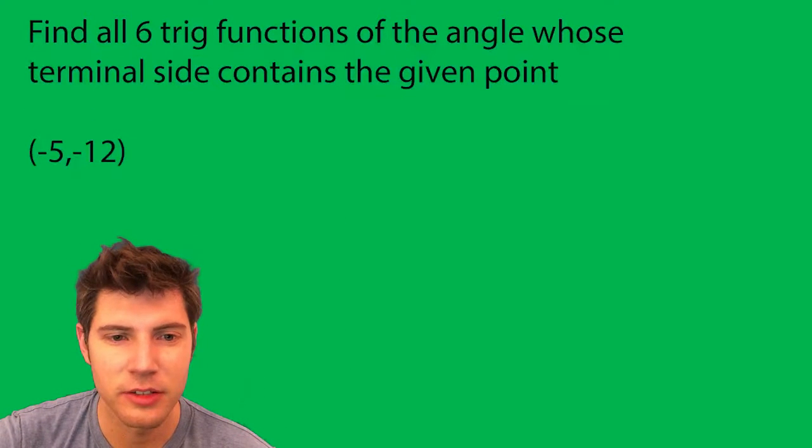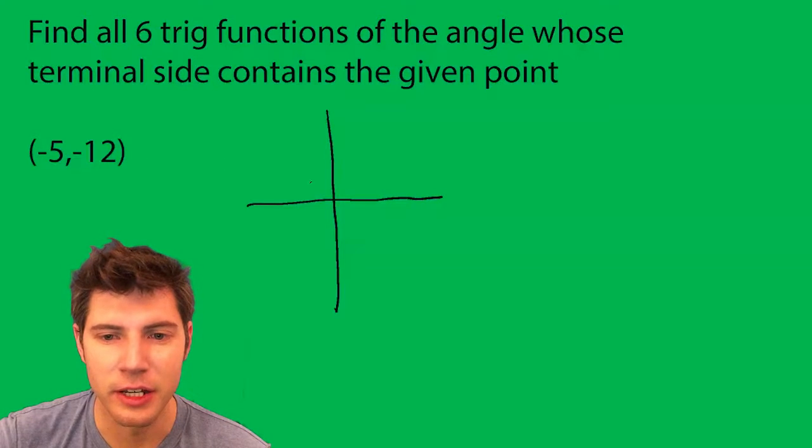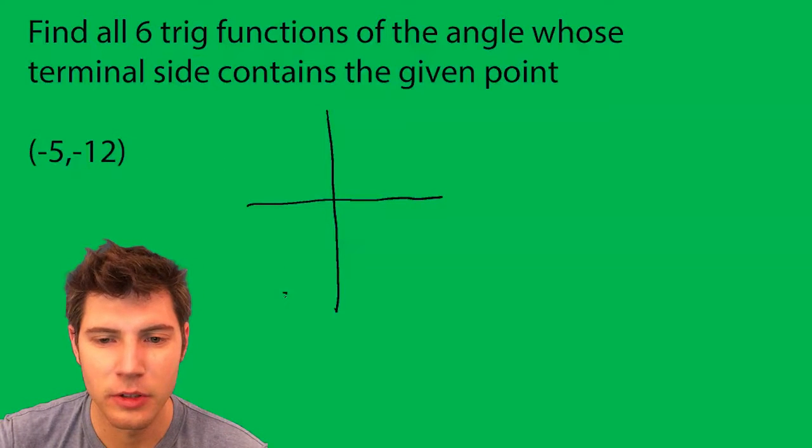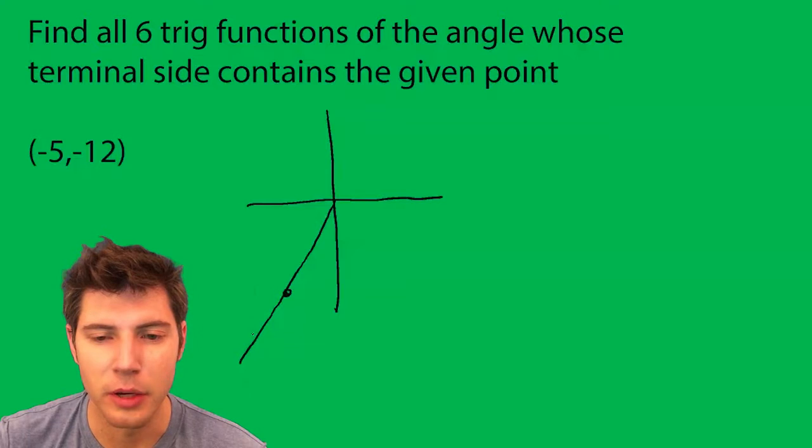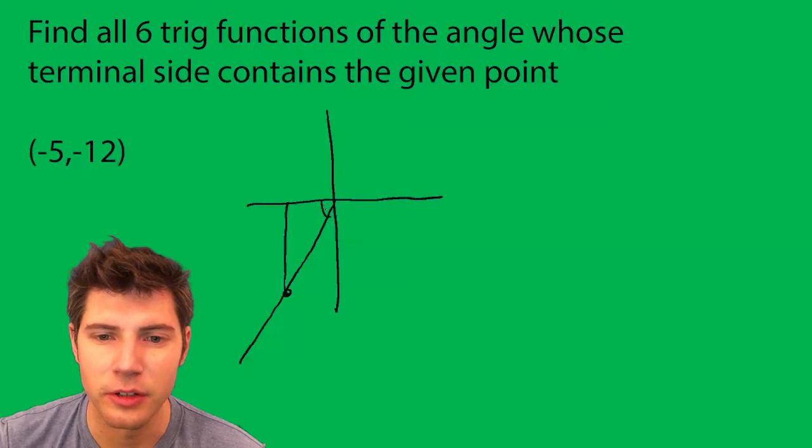So what they're telling us is that if we plot this point (-5, -12), the terminal line goes through that point. So this is our triangle right here with the reference angle.